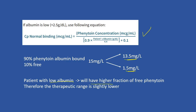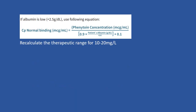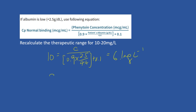Only 10 percent is free, so patients with low albumin tend to have a higher fraction of free phenytoin; therefore the therapeutic range is slightly lower. Calculating the therapeutic range for this patient: 10C divided by (0.9 multiplied by 2.5 divided by 4.4) plus 0.1 gives 6.1 mg per liter for the lower bound. Doing the same calculation for 20 gives 12.2, so the therapeutic range for this patient is 6.1 to 12.2 mg per liter.